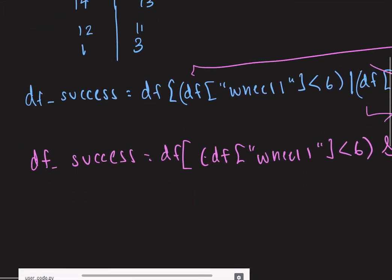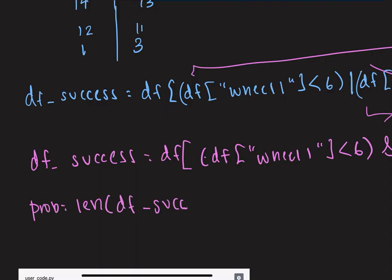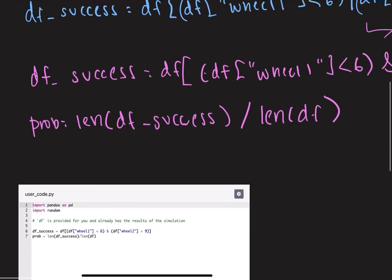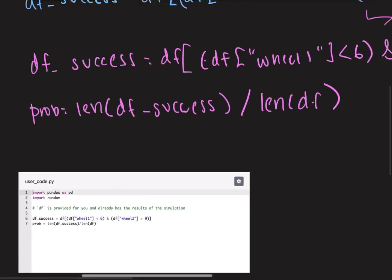So once you have that, then all we need to do to find the probability is just divide the length of DF success by the length of our original data frame, and that'll give you a probability. So the code would look something like this. Hope that was helpful. Thank you.